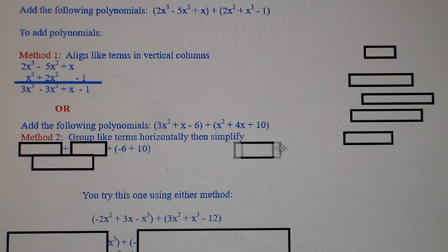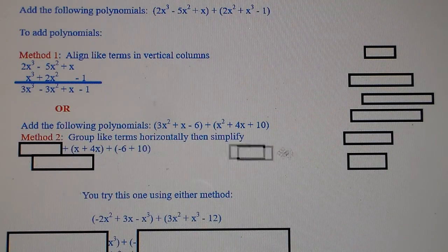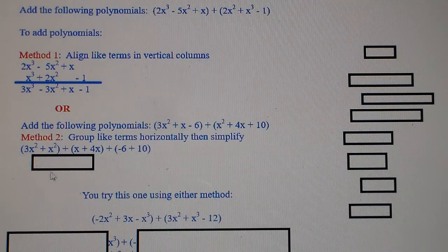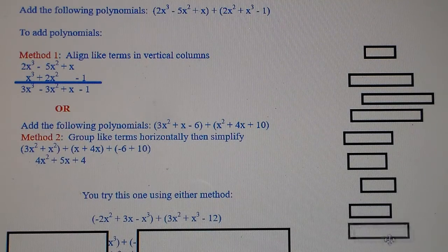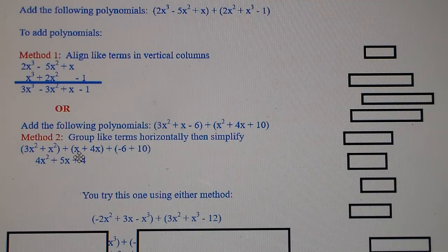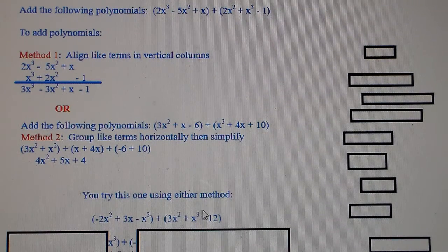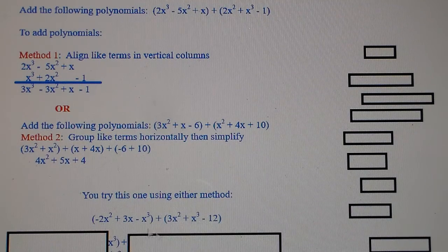Another way is to group like terms horizontally, then simplify. Put all the x² terms together, add them up. Put the x terms together — 1x + 4x gives you 5x. Then negative 6 and 10 grouped together give you positive 4. Use whichever method is easier for you.